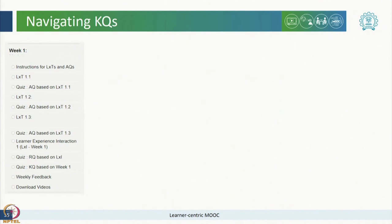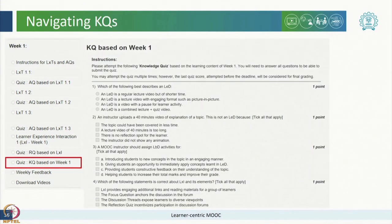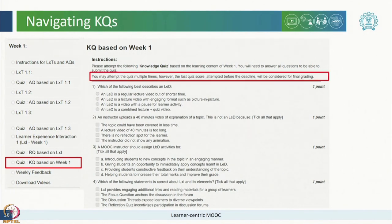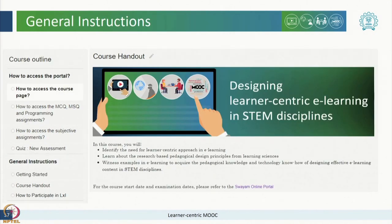You will also have one graded knowledge quiz every week which will be based on the concepts covered in the whole week. You will find the knowledge quiz again in the course outline panel in the same unit containing LXTs, AQs, LXI and RQ for the week. Once you click on it, the quiz will open up for you to attempt. Similar to the assimilation quiz and reflection quiz, you may attempt the knowledge quiz multiple times. However, the last quiz score attempted before the deadline will be considered for final grading. Detailed instructions on the overall grading policy and other information related to the course is available in the course handout which has been placed in the unit named General Instructions.